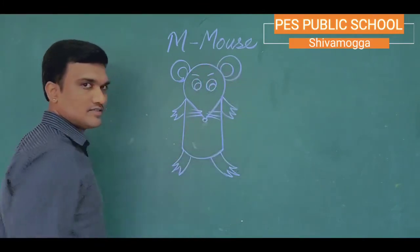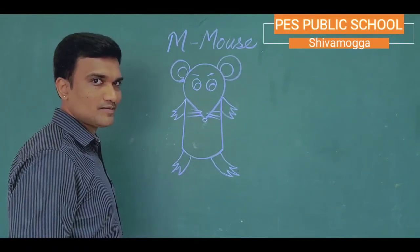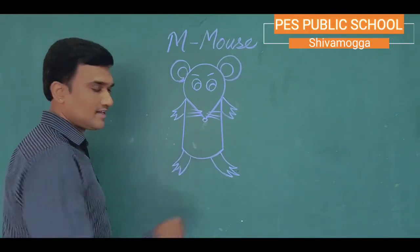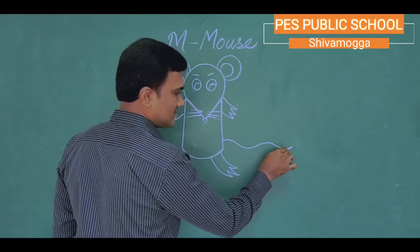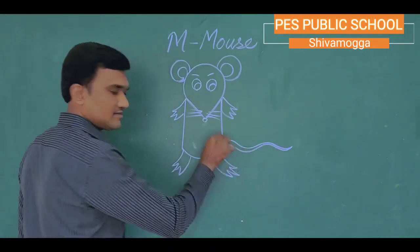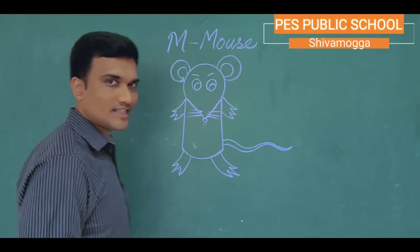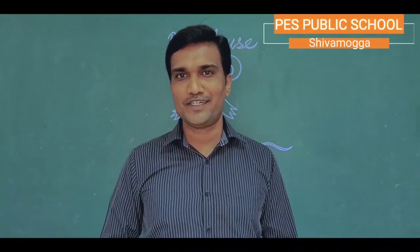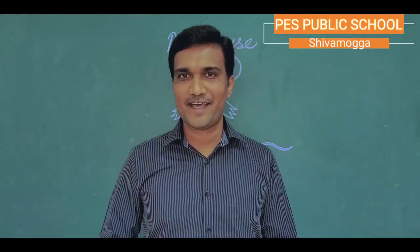Okay, here you can draw the eyes — eyes, eyes. Then what is left out? The mouth. Easy, isn't it? Children, draw it, color it, and post it in your group. Bye, have a nice day!